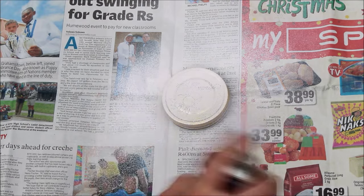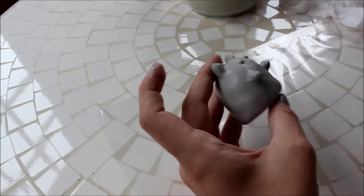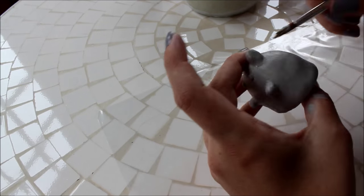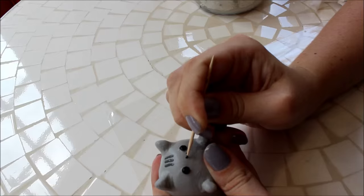While your Pusheen dries, spray paint the lid of your jar your desired color and leave it to dry. When your Pusheen is completely dry, paint it grey. Add black for the eyes and mouth and some dark grey stripes on the head.